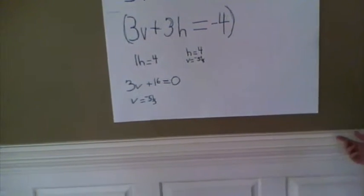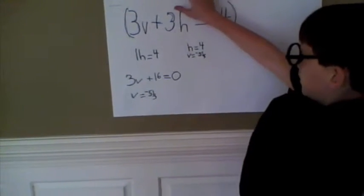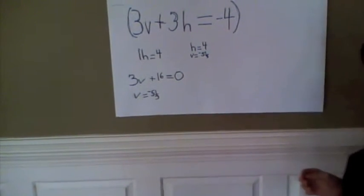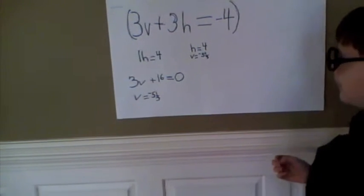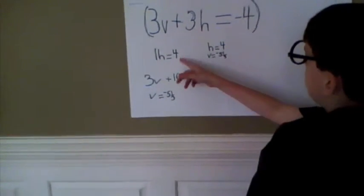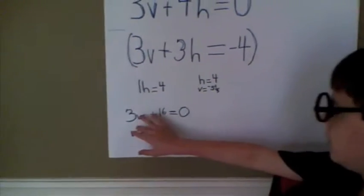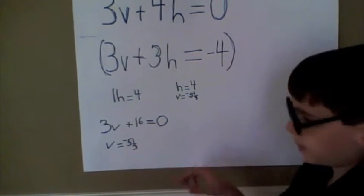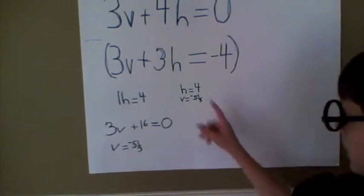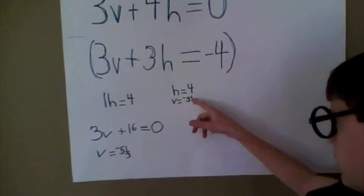And then you have to put h into the first equation to find out v. So, you put 4 in for h, so you get 3v plus 16 equals 0. And when you're finished solving the equation, h equals 4, and v equals negative 5 and 1 thirds.